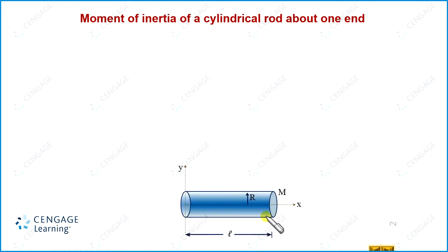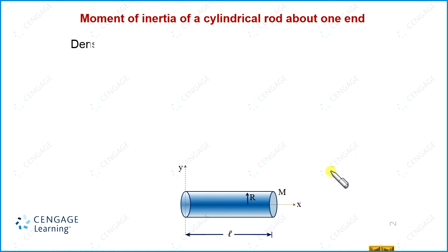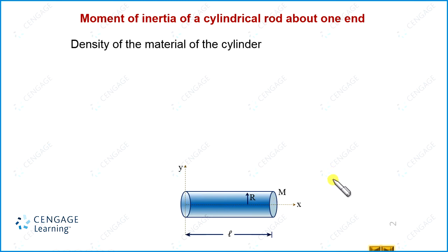Here we are considering the mass is uniformly distributed over the volume. The length of the cylinder is l and radius is r. The volume of the cylinder equals πr²l, and as mass is uniformly distributed, the density ρ equals mass divided by volume, that is m divided by πr²l.